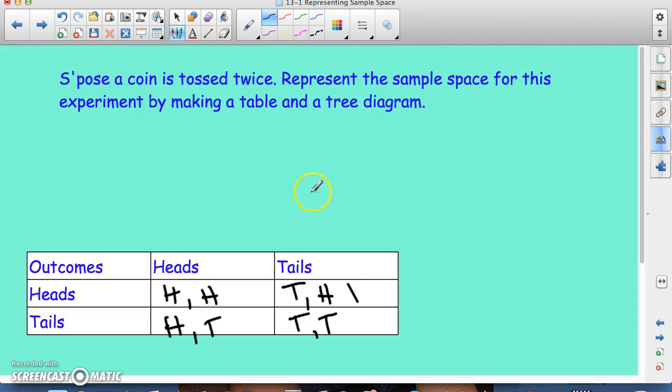So when you do a tree diagram, you start out with the outcomes. You don't have to start out with this word. Your book does this. When you start out with the outcomes here, the first toss is going to be the first branches of your tree. So the first toss, you could either get heads or tails.